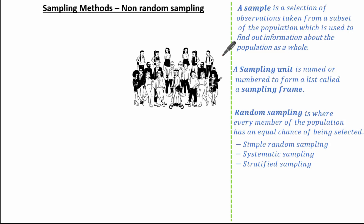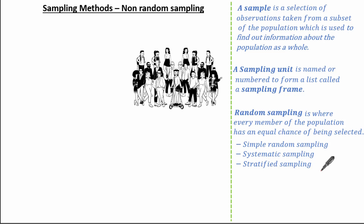Hello everyone and welcome to this tutorial on non-random sampling. Remember, random sampling is where every member of the population has an equal chance of being selected. There were three types of random sampling we looked at in the previous tutorial: simple random sampling, systematic sampling, and stratified sampling. In all cases we needed a sampling frame made up of sampling units. Let's recap on what random sampling is with this example.